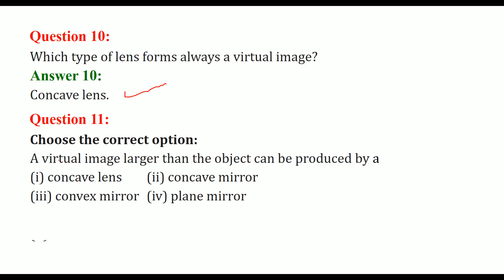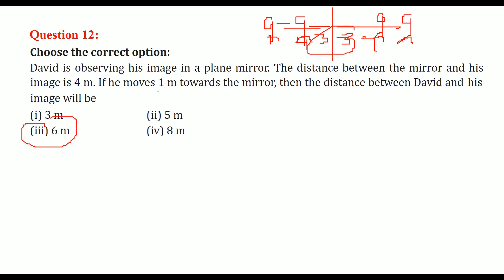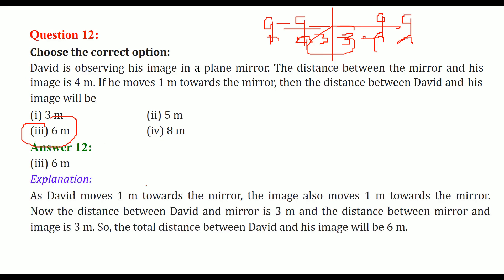Choose the correct option: The virtual image larger than the object can be produced by a concave mirror. Next question — David is observing his image in a plane mirror. The distance between the mirror and his image is 4 meters, so his distance from the mirror is also 4 meters. If he moves 1 meter towards the mirror, his distance from the mirror becomes 3 meters, and the image is also 3 meters behind the mirror. So the total distance between David and his image is 6 meters.